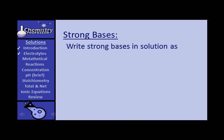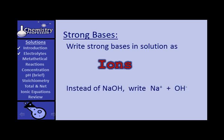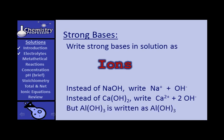When we write these strong bases in solution, we should write them as they appear predominantly — as ions. Instead of sodium hydroxide, write sodium ions and hydroxide ions. Instead of calcium hydroxide, write calcium ions and 2 hydroxide ions, because calcium hydroxide breaks up to give 1 calcium ion and 2 hydroxide ions. But aluminum hydroxide is written in molecular form, since it does not dissociate like that.